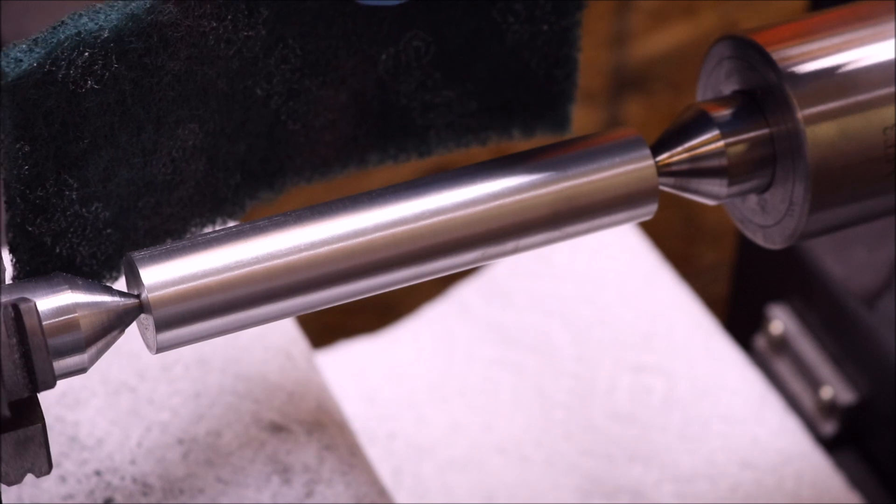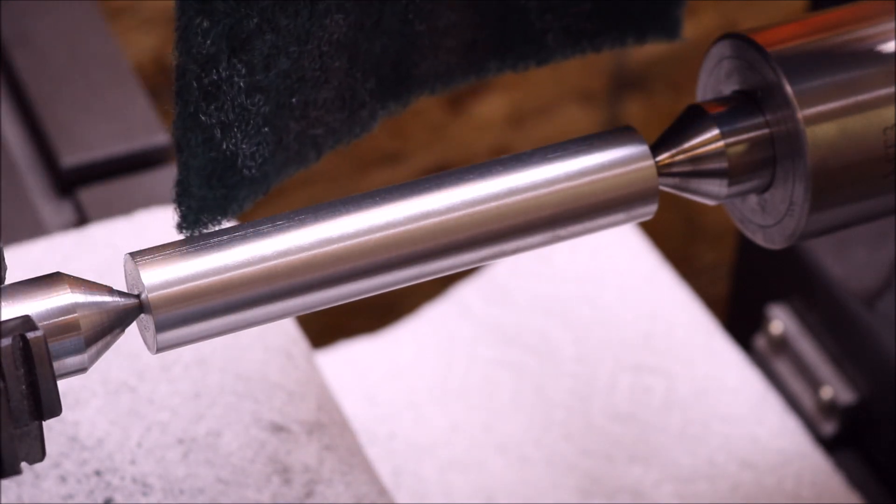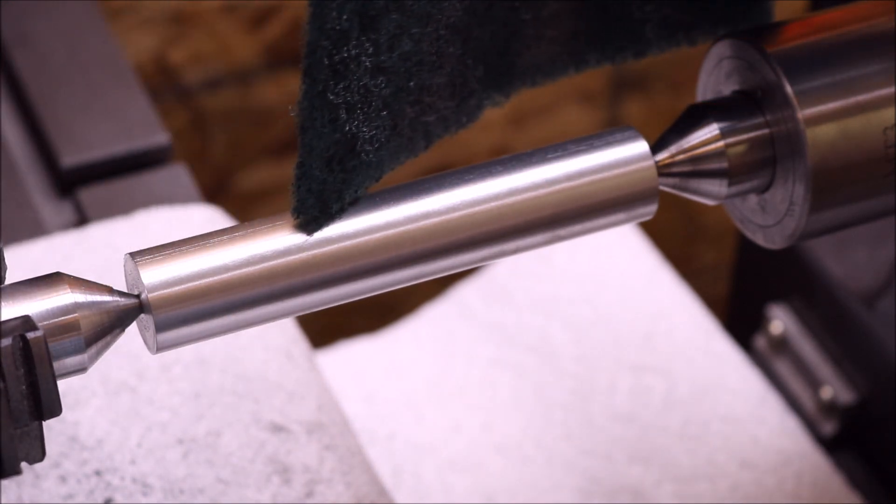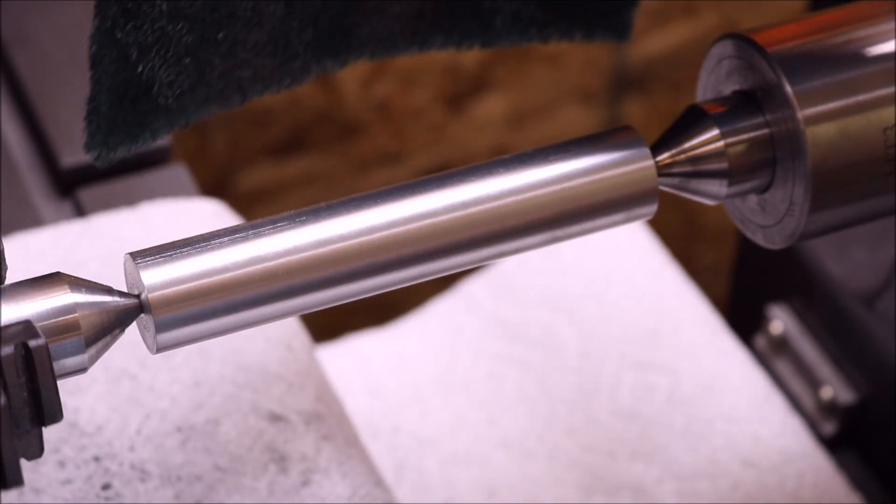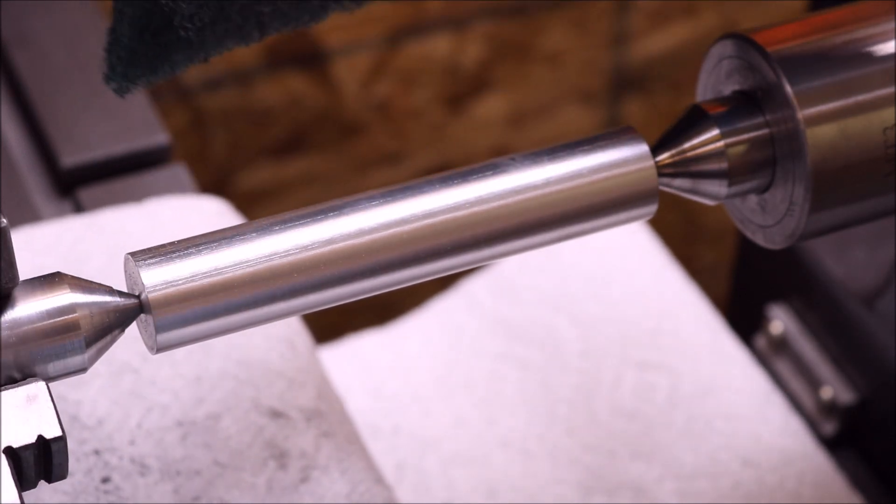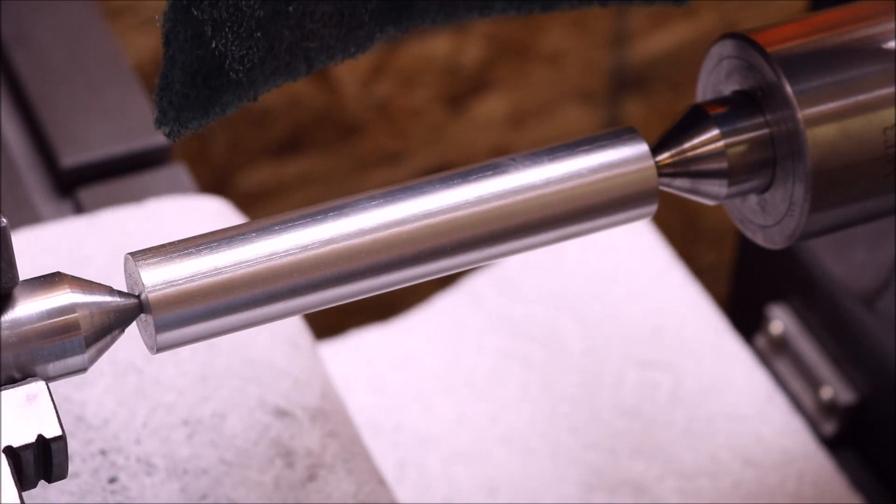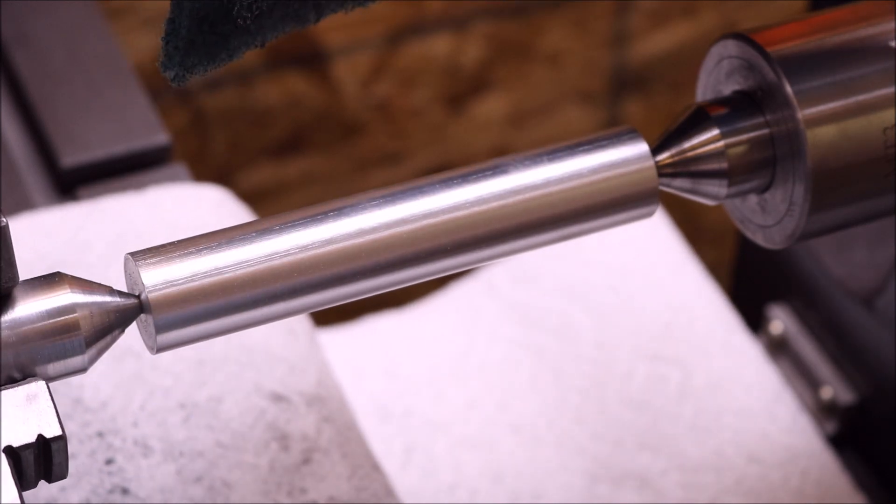Here in the reflection you may be able to see some of the lines, such as this one right here. That's what we're looking to get down behind with the green scotch-brite.